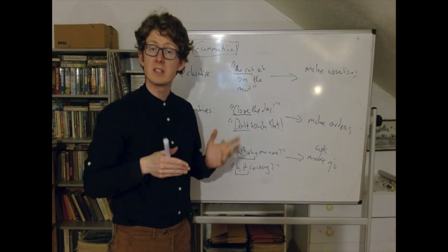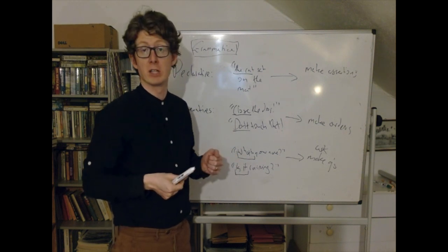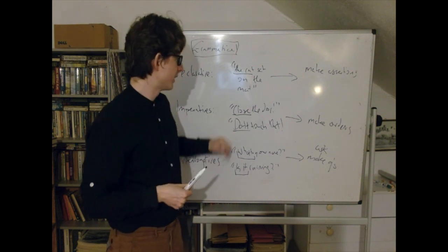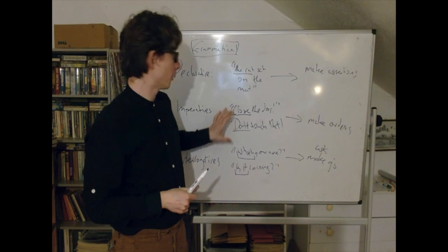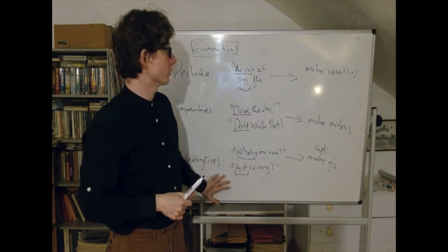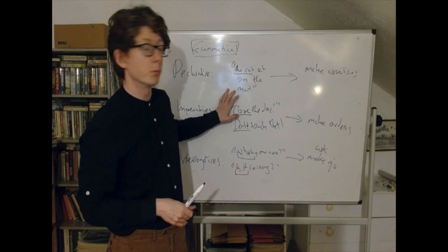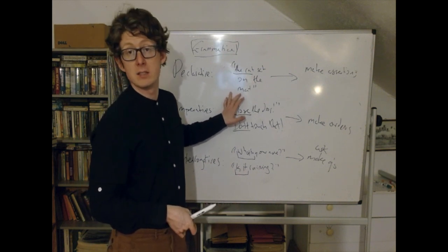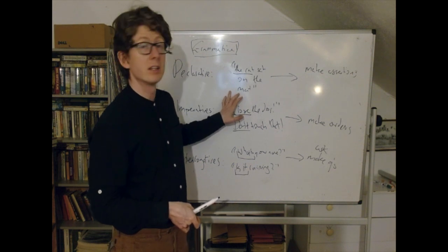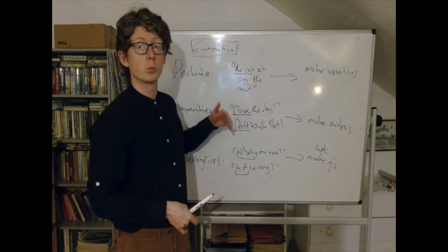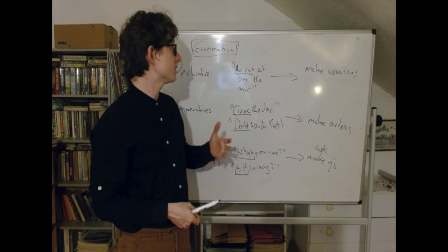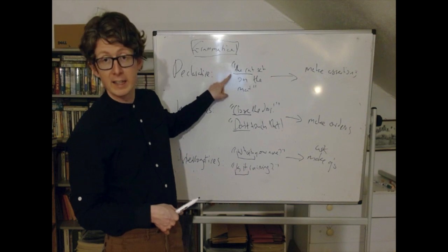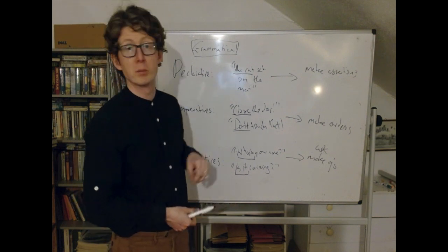The basic idea of the grammatical view is that it's baked into the grammar of all these different kinds of sentences what the sentences are supposed to do. Now, if we think about it, we can see that performatives — the kinds of things we've just been talking about — look like they cause a problem for this view. They don't cause a problem for the grammatical view as applied to imperatives or interrogatives, but they do seem to cause a problem when we think about declaratives. Because Austin characterized performatives as sentences that appear in the declarative mood — grammatically, they look like 'the cat sat on the mat' — but they're not used to make an assertion.